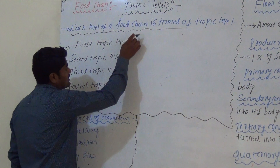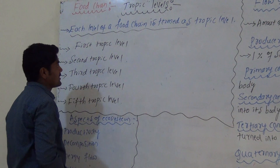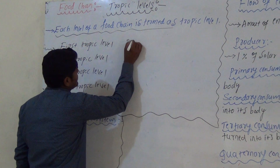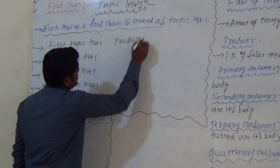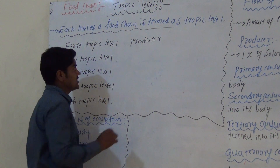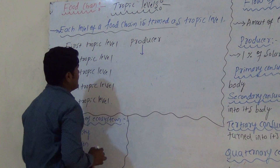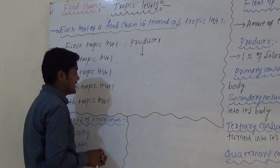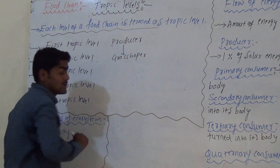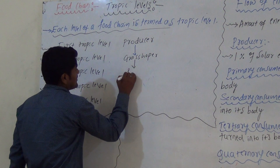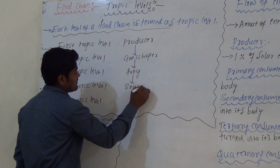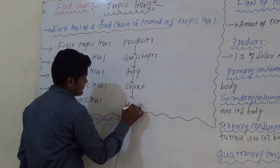In a food chain, the producer comes in the first position. For example: producer, then grasshopper, third one is frog, fourth one is snake, and fifth one is hawk.